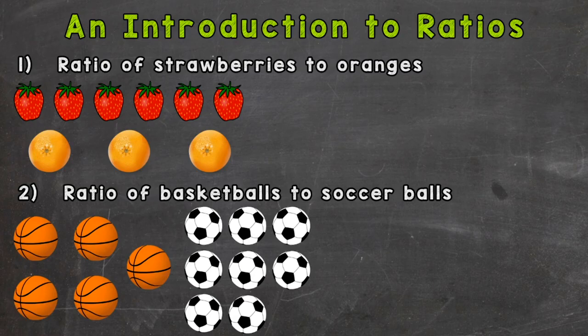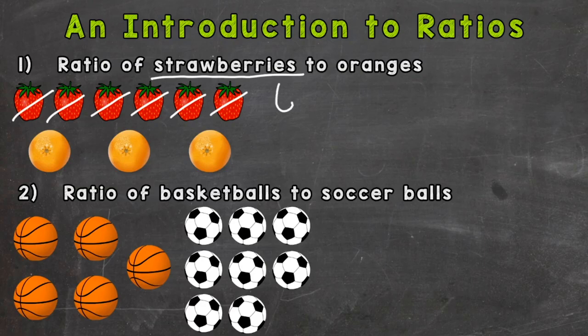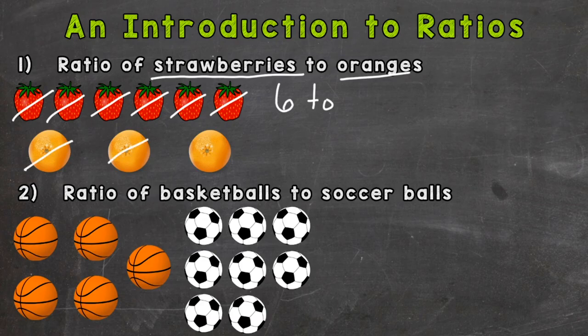For example, number one, we have the ratio of strawberries to oranges. So we're going to compare the quantity or number of strawberries to the quantity or number of oranges. There's a few different ways we can write these ratios out. So let's first start by counting the number of strawberries: one, two, three, four, five, six.